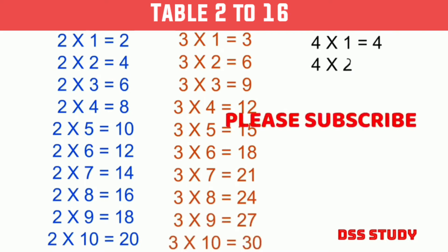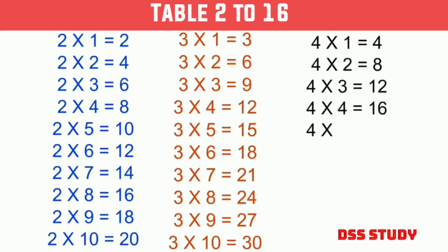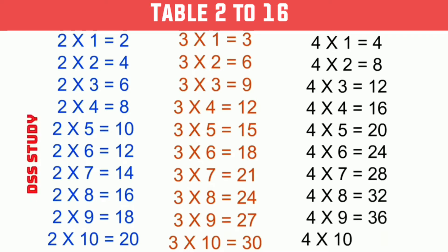4 times 1 is 4, 4 times 2 is 8, 4 times 3 is 12, 4 times 4 is 16, 4 times 5 is 20, 4 times 6 is 24, 4 times 7 is 28, 4 times 8 is 32, 4 times 9 is 36, 4 times 10 is 40.